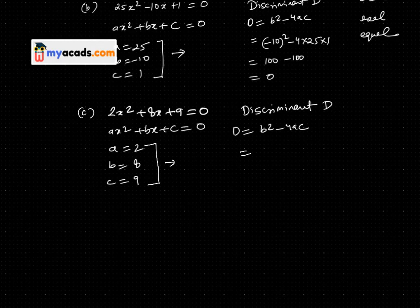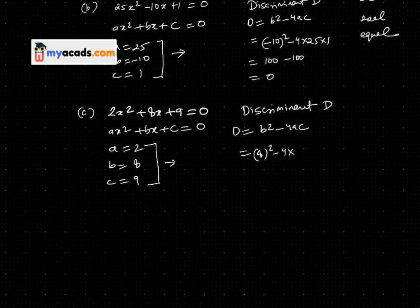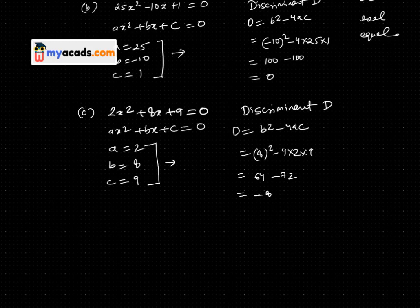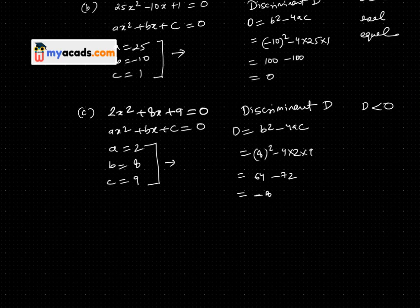For the discriminant, D = b² - 4ac. 8² = 64, and 4 × 2 × 9 = 72. So D = 64 - 72 = -8. Since D < 0, there are no real roots.